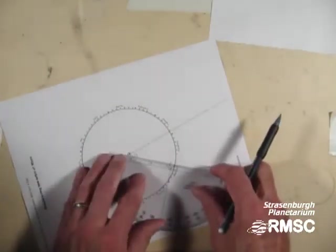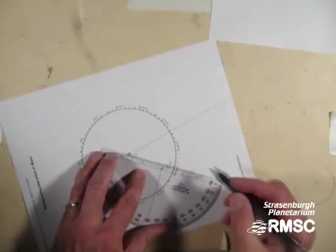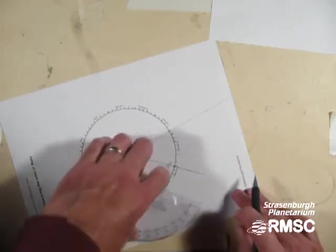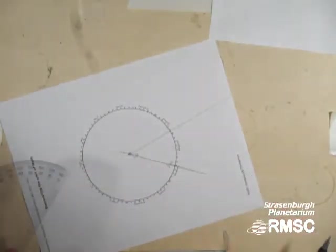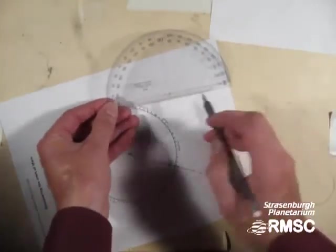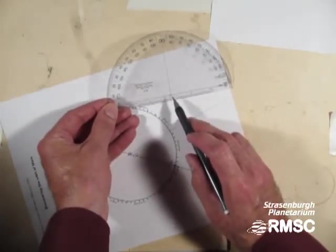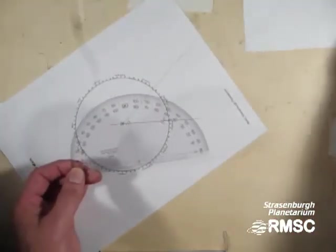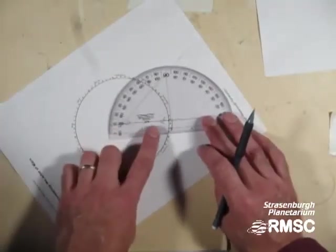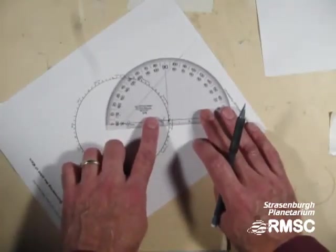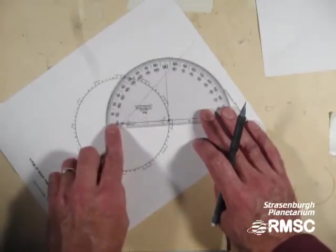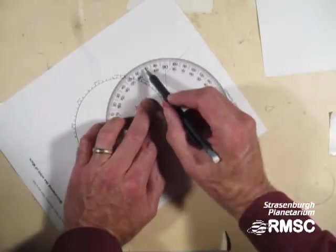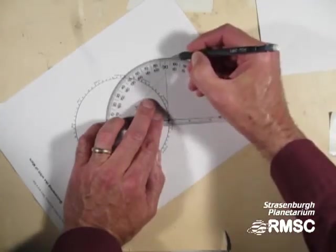So we draw a line from S to E. And we use our protractor to measure angle SEM. Some protractors have the vertex right at the edge, some don't. This one doesn't. Check yours to make sure your angles come out right. Anyway, I want 96 degrees for angle SEM, so I put the vertex on the Earth. I line up the zero degree line with the line to the Sun, and I measure 96 degrees. Let's see, 70, 80, 90, 96 is right about there.